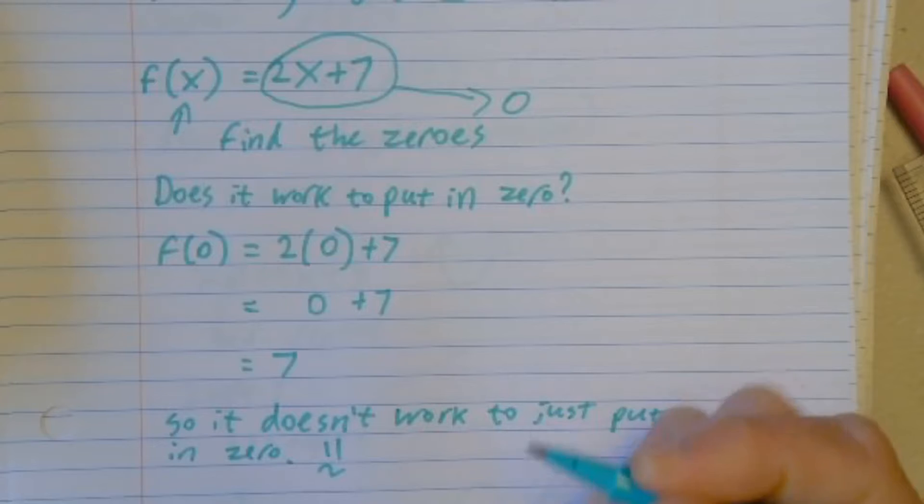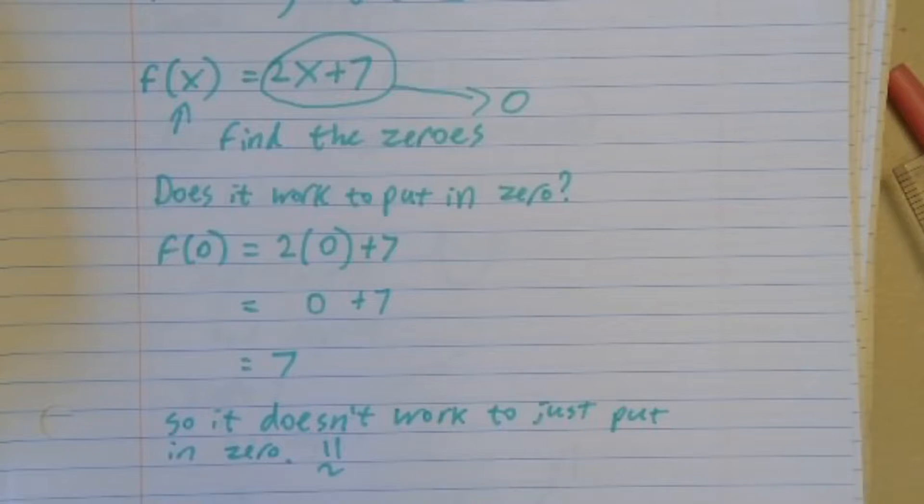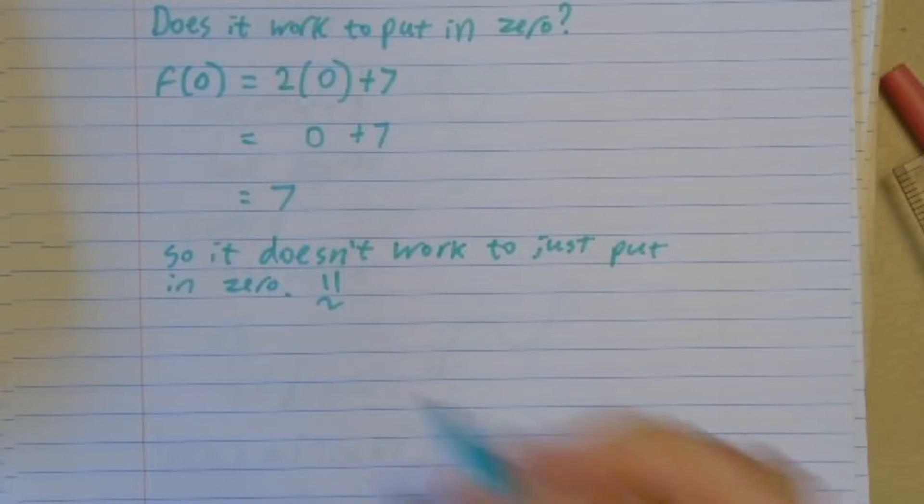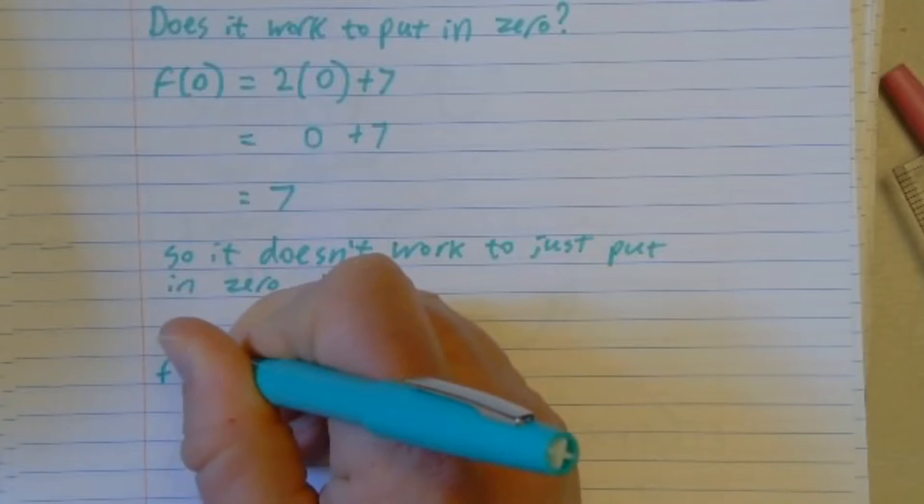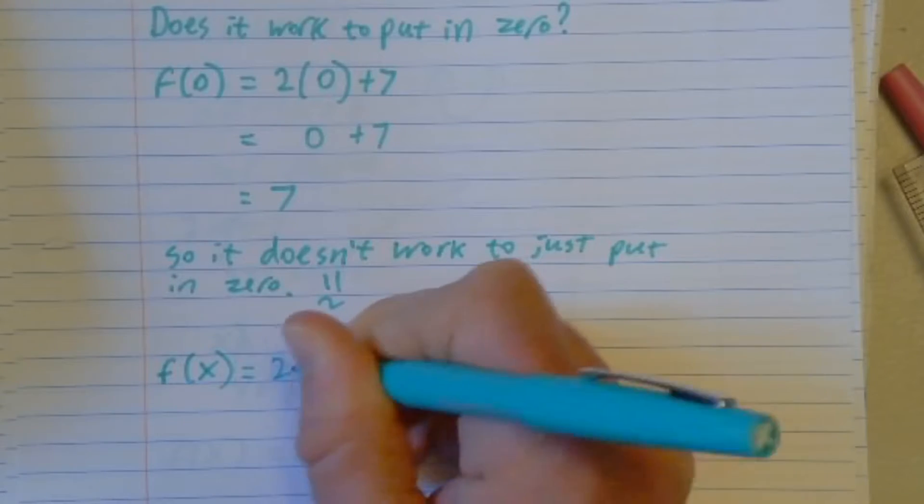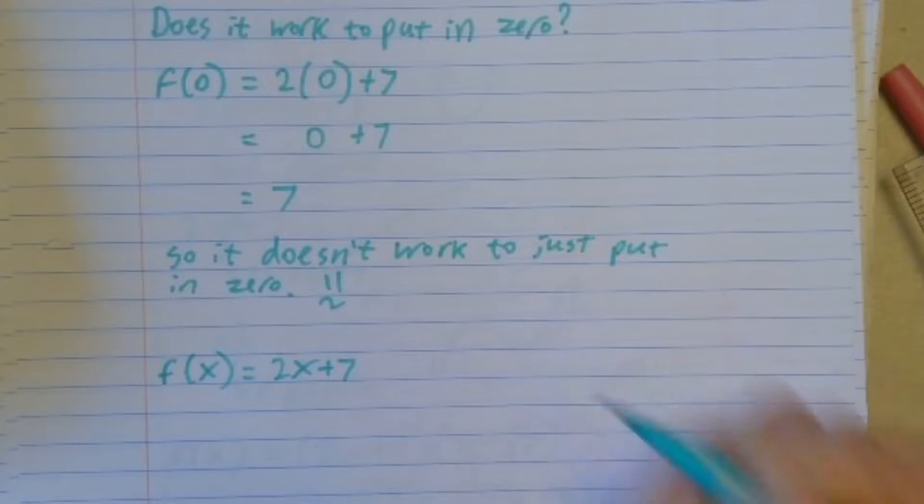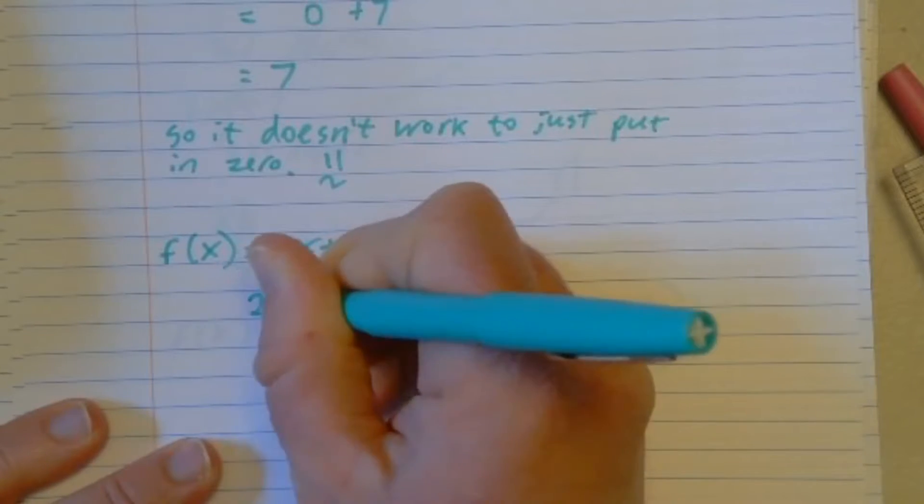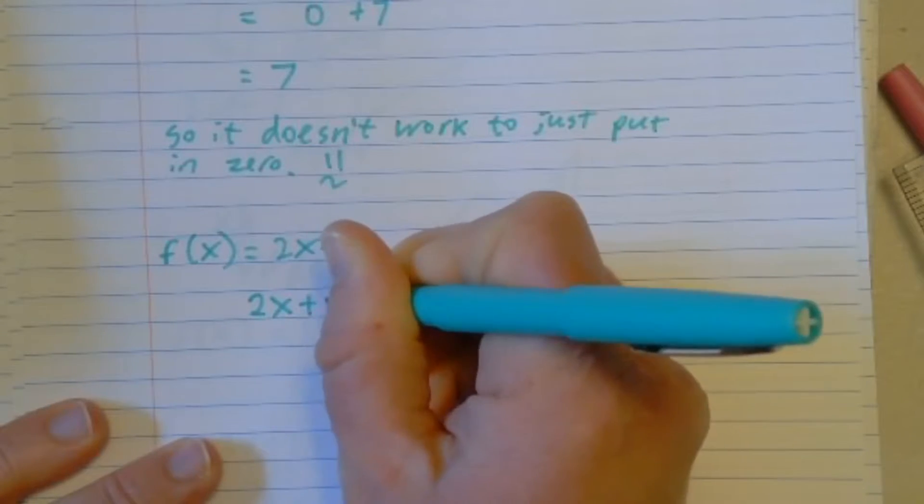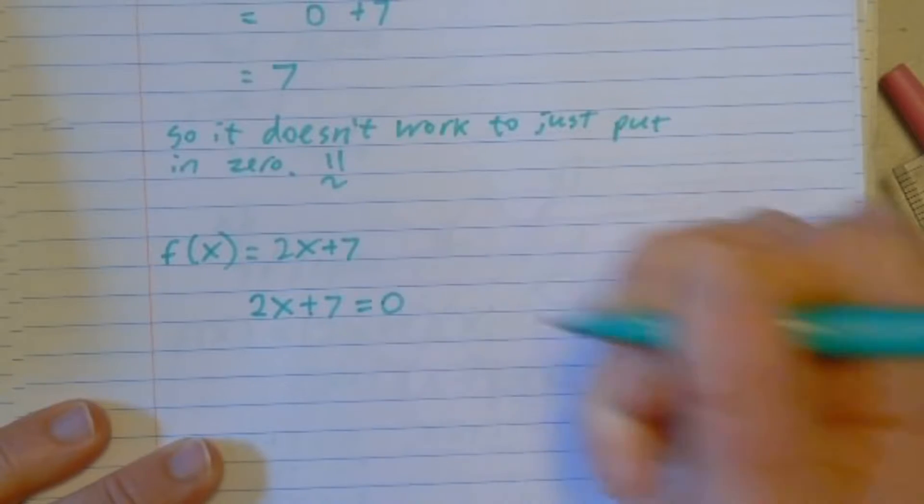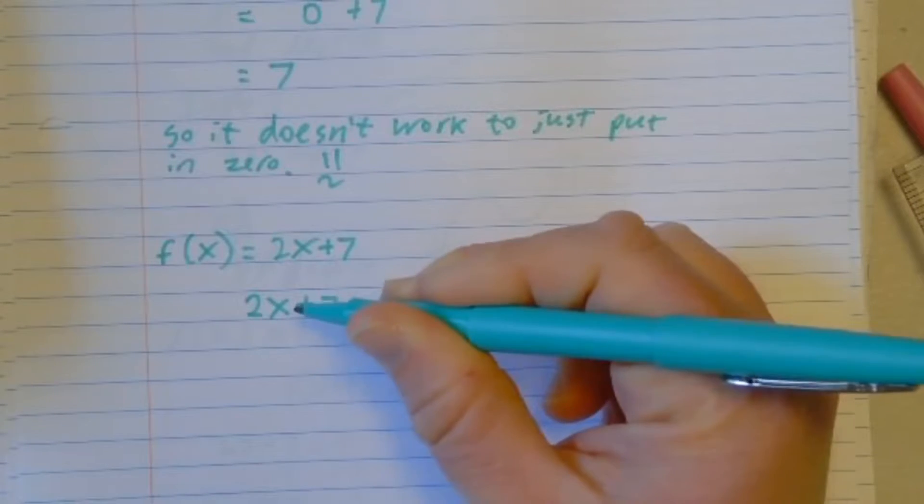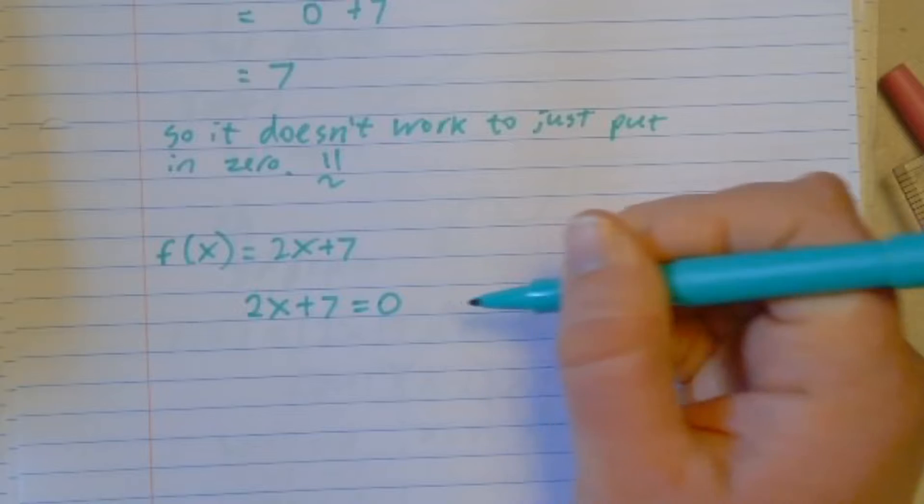Instead, we have to solve for x when it's equal to zero so we can figure out what x we need to put in and work backwards. So instead, if we have f of x is equal to 2x plus 7, we have to see what happens when we have 2x plus 7 equals 0. That'll tell us what number we need for x in order for the output to be 0.